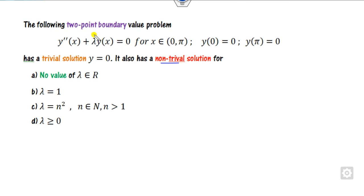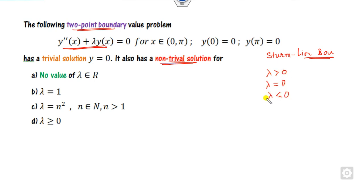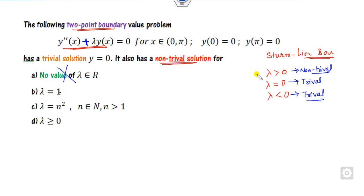This is a two-point boundary value problem, which is always a Sturm-Liouville boundary value problem. The question asks for the non-trivial solution. Always remember there are 3 cases. Whenever lambda equals 0, we always get a trivial solution. Here there is a positive sign, so whenever lambda is less than 0, we get a trivial solution. When lambda is greater than 0, it is a non-trivial solution. Lambda greater than or equal to 0 is not correct because equality gives the trivial solution. The right answers are B and C — no need to solve the full problem.